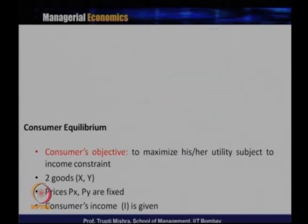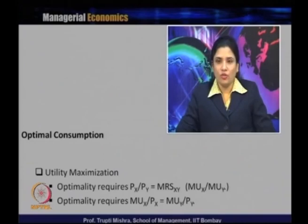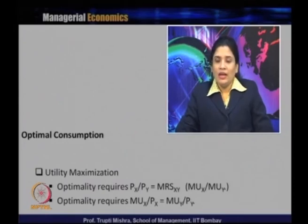The consumer's optimization problem is to maximize utility subject to the income constraint, with two goods X and Y, fixed prices Pₓ and Pᵧ, and fixed income. The precondition for this optimality is that the slope of the budget line equals the slope of the indifference curve. The slope of the budget line is Pₓ/Pᵧ, and the slope of the indifference curve is the marginal rate of substitution (MRS), equal to MUₓ/MUᵧ.